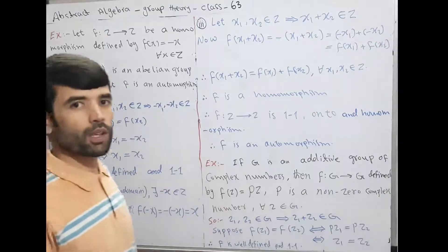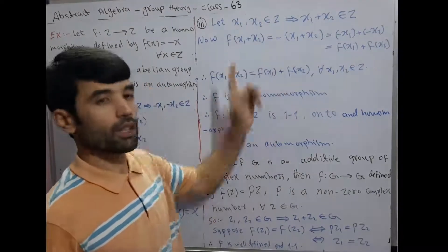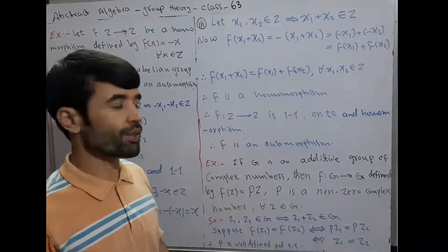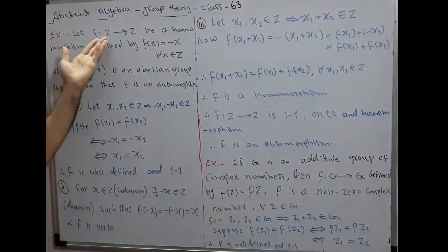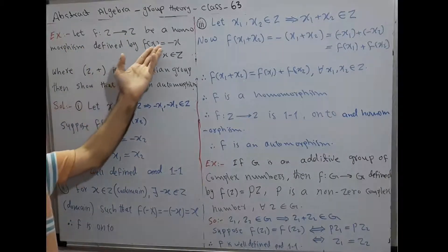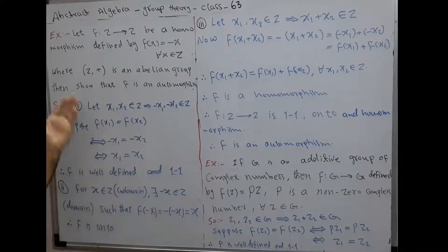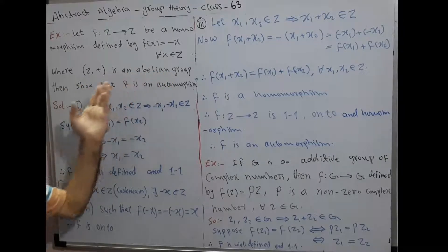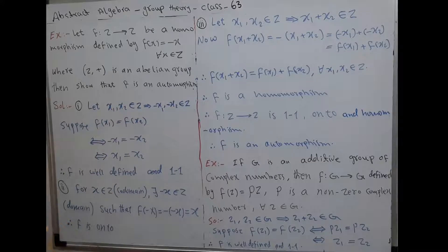Hello friend, welcome to the abstract algebra class. It is class 63. In this class we want to prove examples of automorphism. First example: let F from Z into Z be a homomorphism defined by F(x) = -x for all x belonging to Z, where Z with respect to addition is an abelian group. Then show that F is an automorphism.